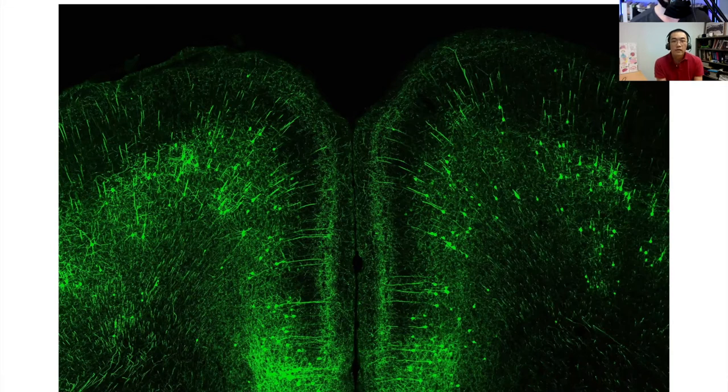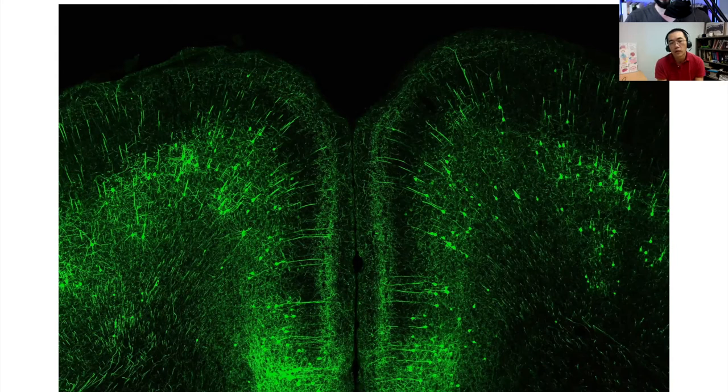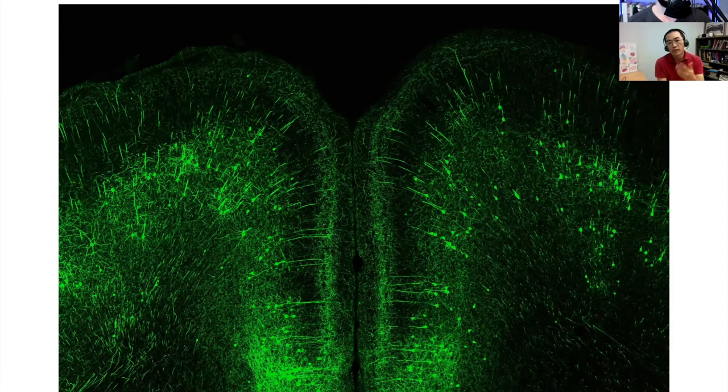So this is a section of the mouse's brain. This is called a coronal section, which is a particular angle of the cut of the brain. What we do here is we sacrifice the animal, we take the brain out, and then we put it in fixative. And then afterward, we bring it to a fluorescent microscope to image it.